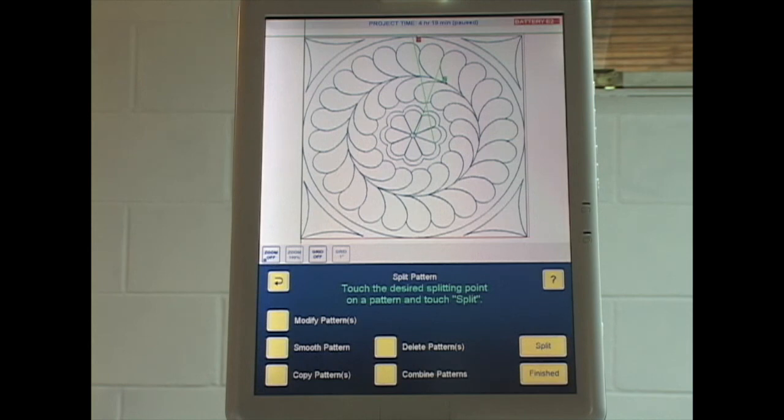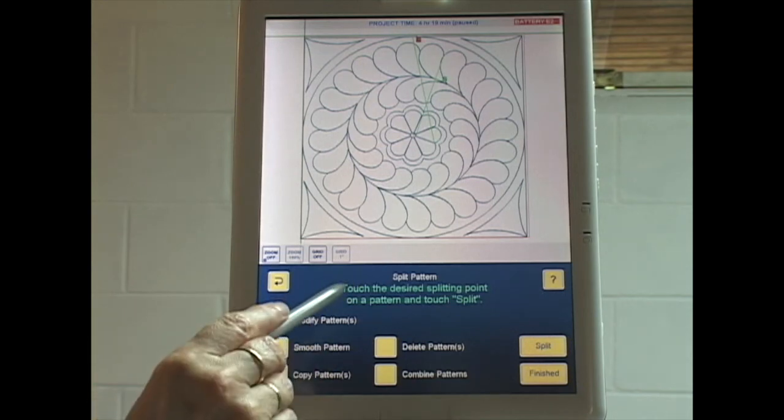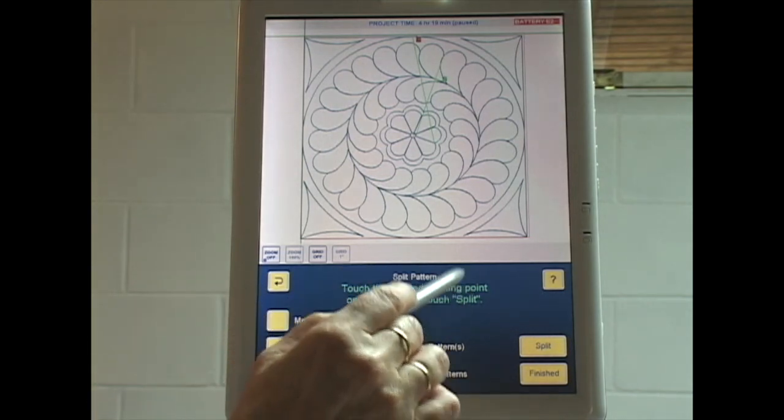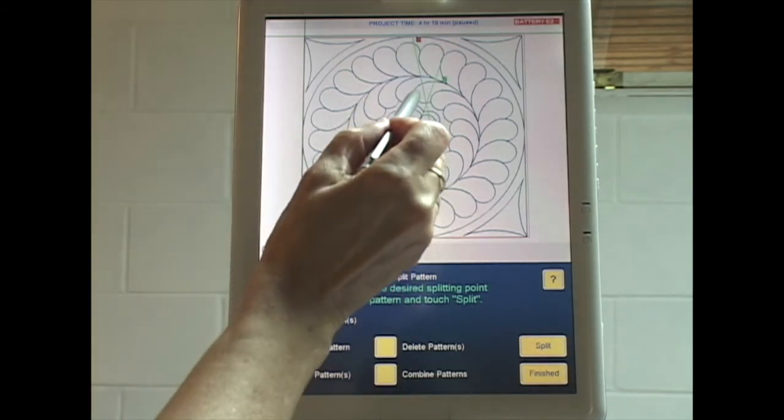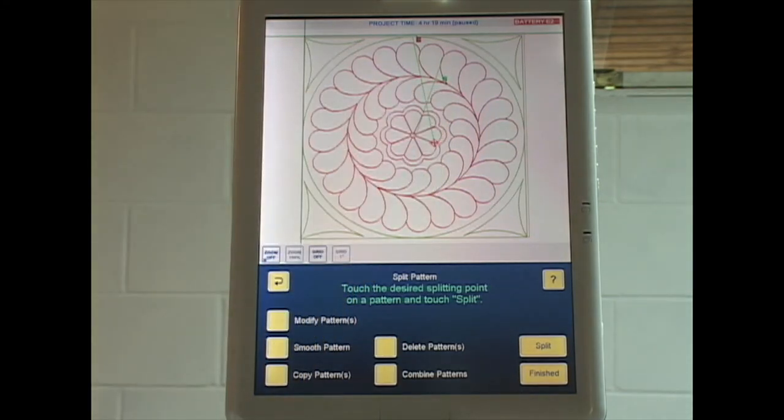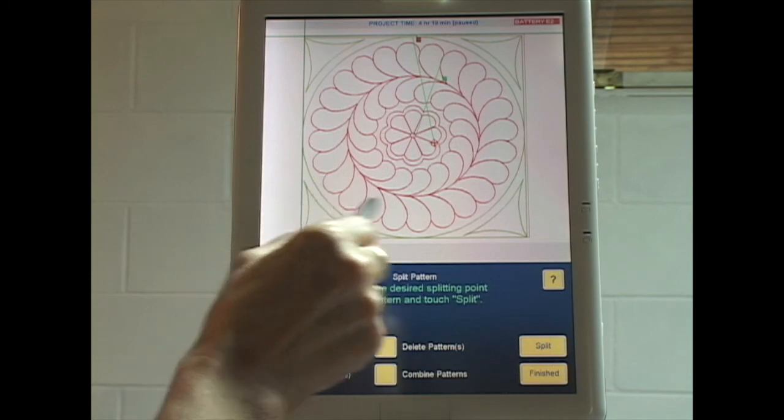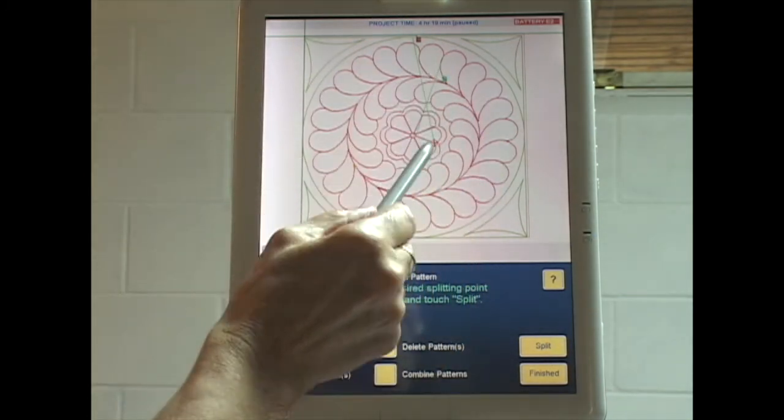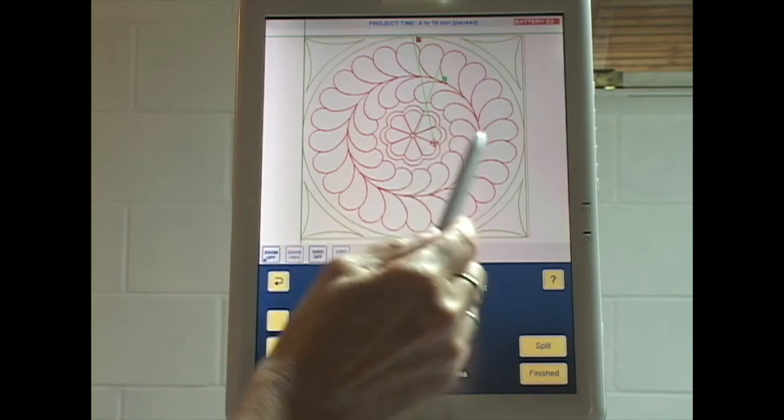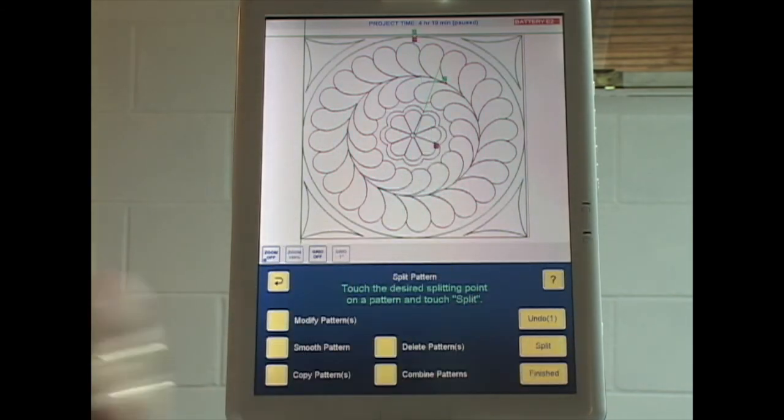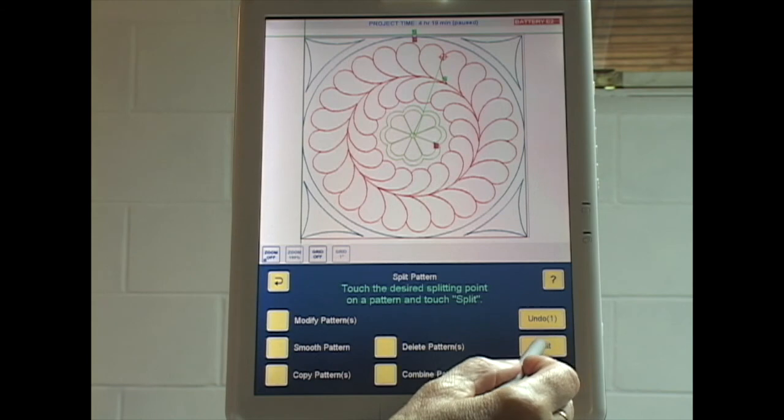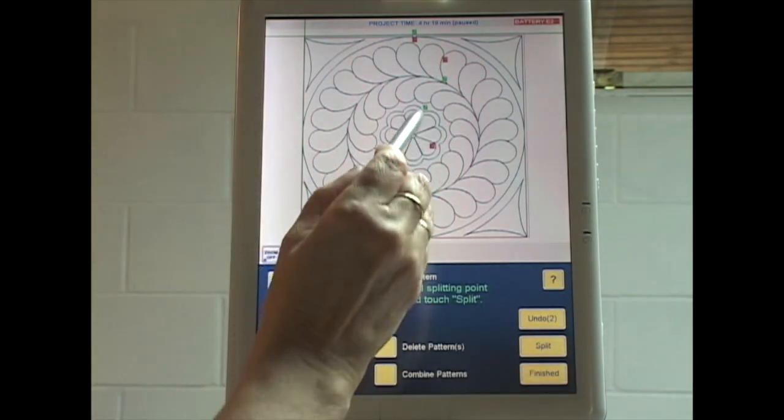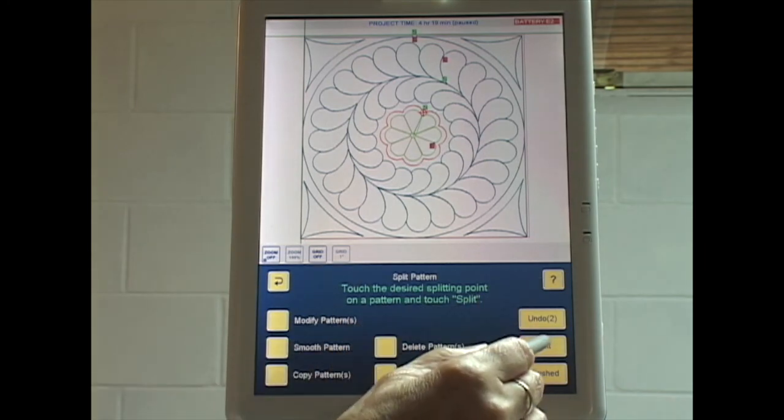Now in order to split this up and get rid of the jump stitches all I have to do is touch somewhere along that green line. It says touch the desired splitting point on a pattern and touch split. I don't need to try and touch at one end of the line. I can just touch anywhere along that green line and now you can see part of the pattern is green, part is red. It's telling me where it's going to split. You can see the target there. That's where it's going to split. When I hit split, the green line is gone. I see another green line. Let's touch that. I'm going to hit split. It's gone. I see another green line. Let's touch that. Split.